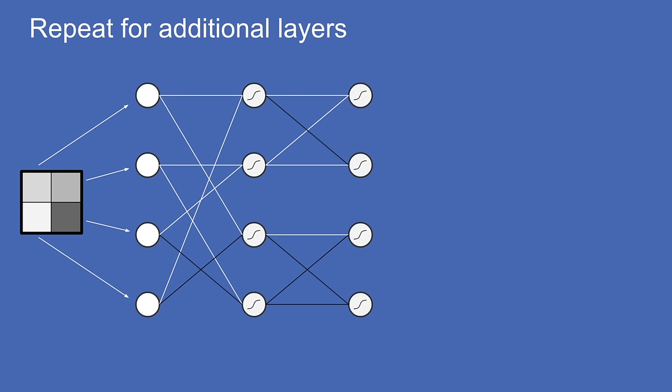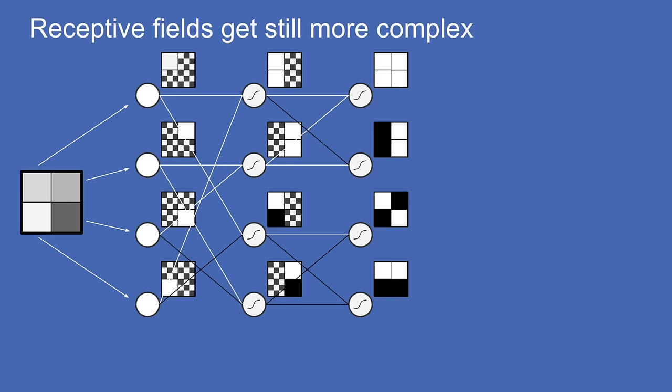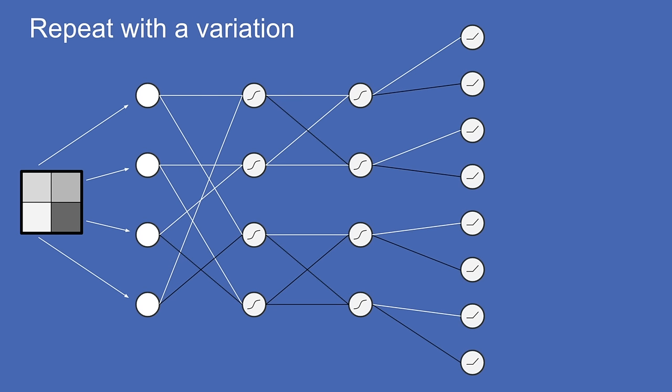Because we were careful about how we created that first layer, its values look a lot like input values, and we can create another layer on top of it in exactly the same way — the output of one layer becomes the input to the next. We can repeat this three times, seven times, or 700 times. Each additional layer produces even more complex receptive fields. All neurons in one layer are connected to all neurons in the previous layer, though we assume here that most of those weights are zero and not shown.